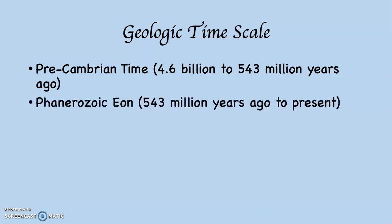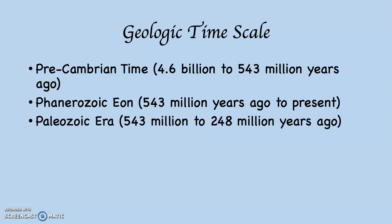Following Precambrian time, our planet entered into what's known as the Phanerozoic Eon. 'Zoic' is one of the Greek words for life, so this is when life really begins to happen in a big way. It goes from 543 million years ago until now, so we are in the Phanerozoic Eon. The Phanerozoic Eon is broken into three eras. The Paleozoic Era — 'Paleo' means old, so this means old life — went from 543 million years ago to 248 million years ago.